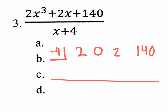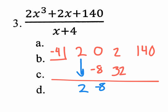Synthetic division: the number comes down, you combine it with what's below — there's nothing there so two comes down. Take negative four, multiply by two — that's negative eight. Bring it down: zero plus negative eight is negative eight. Multiply: negative four times negative eight is positive 32. Bring down: two plus 32 is 34. Then negative four times 34 gives negative 136. The last number is the remainder, which means we have a remainder of four.